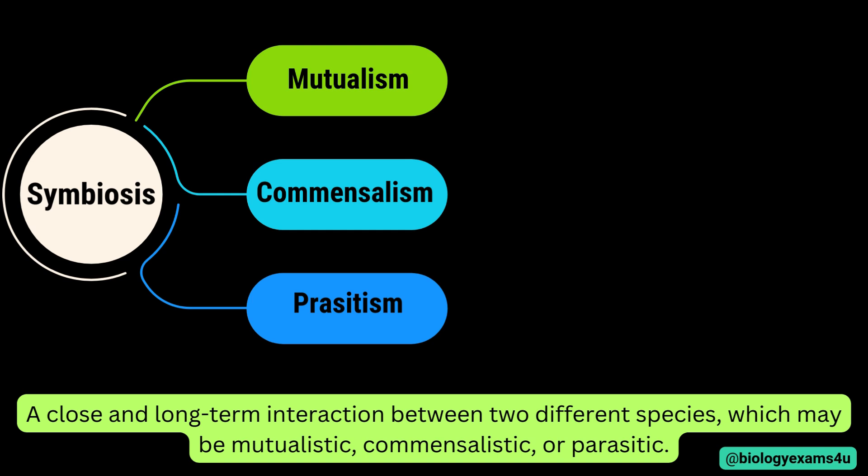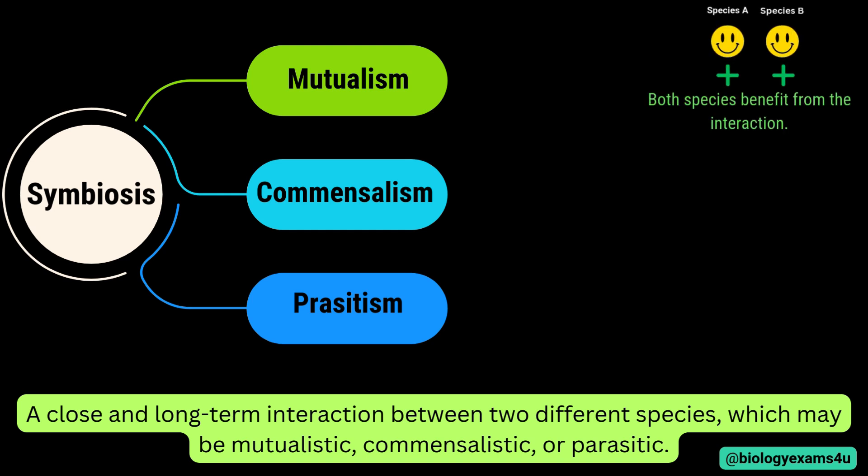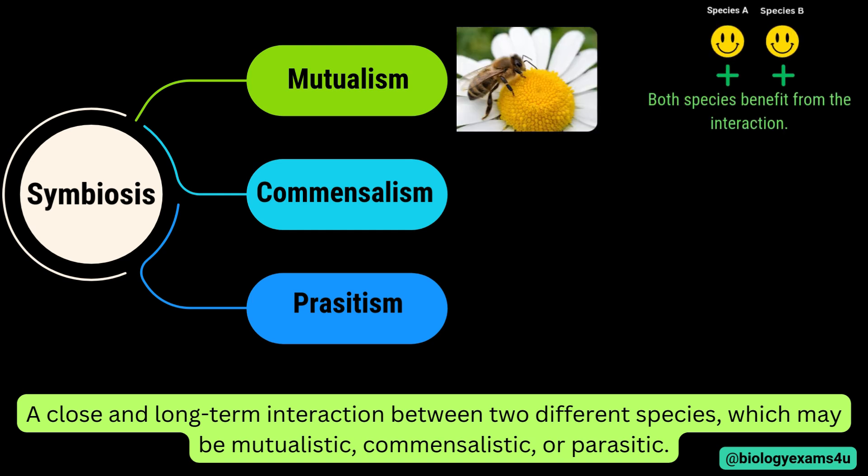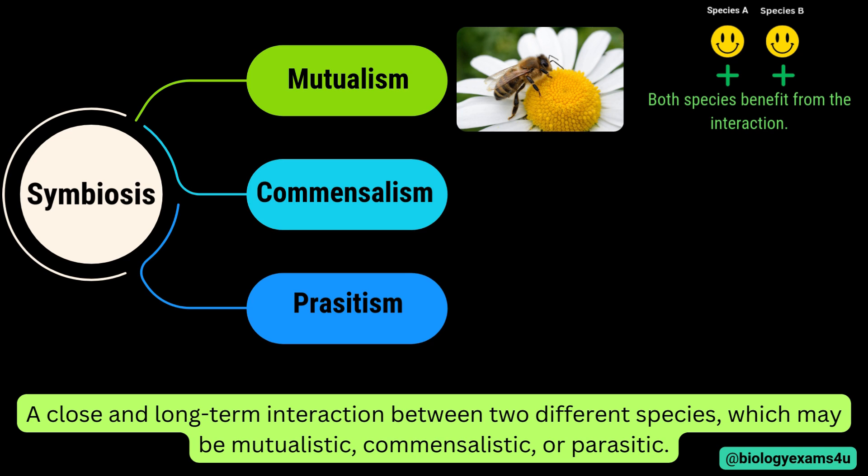The first one is mutualism, where both species benefit from the interaction. An example is bees and flowering plants — bees pollinate flowers while collecting nectar, so both are benefited. Other examples include clownfish and sea anemones, where clownfish receives protection from predators while providing nutrients to the anemones.